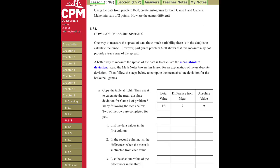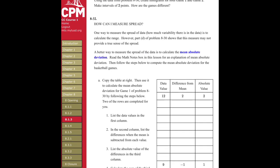How can I measure spread? One way to measure the spread of data, how much variability there is in the data, is to calculate the range. However, Part D of problem 8-30 shows that this measure may not provide a true sense of the spread. A better way to measure the spread of the data is to calculate the mean absolute deviation. Read the math notes in this lesson for an explanation of mean absolute deviation. So let's go look at the notes.